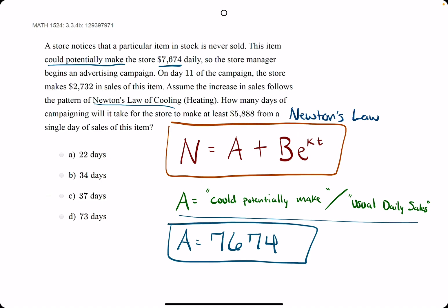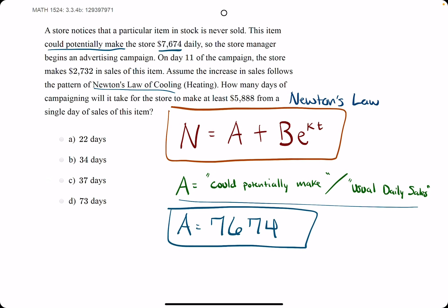We're going to chip away identifying what our unknowns are to complete the question. Next step is making a little T and N chart. There will always be three columns for T and N pairs. At day 11, they make $2,732.